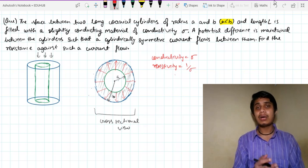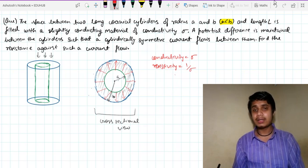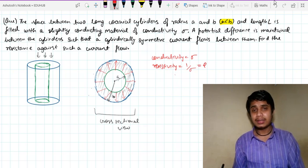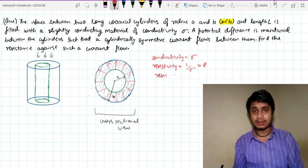Now, how can I attack this problem? First of all, I have been given rho, I have been given the rho which is 1 over sigma. Now I know that resistance is rho L upon A.